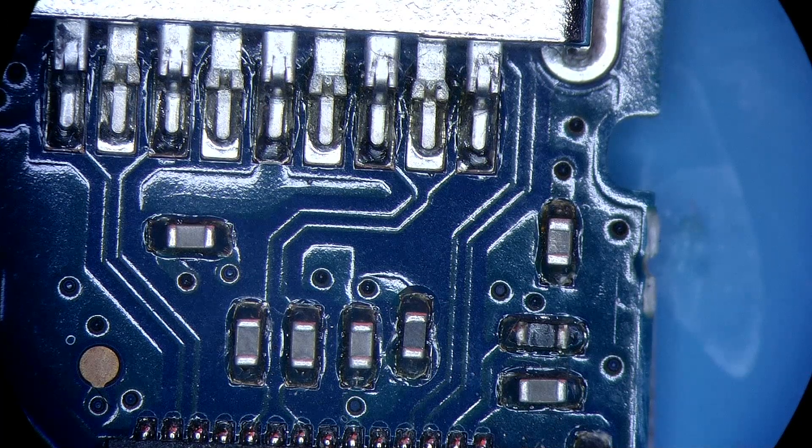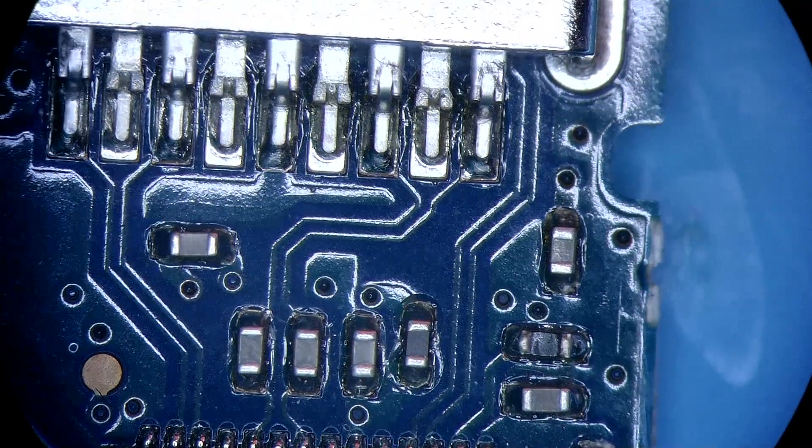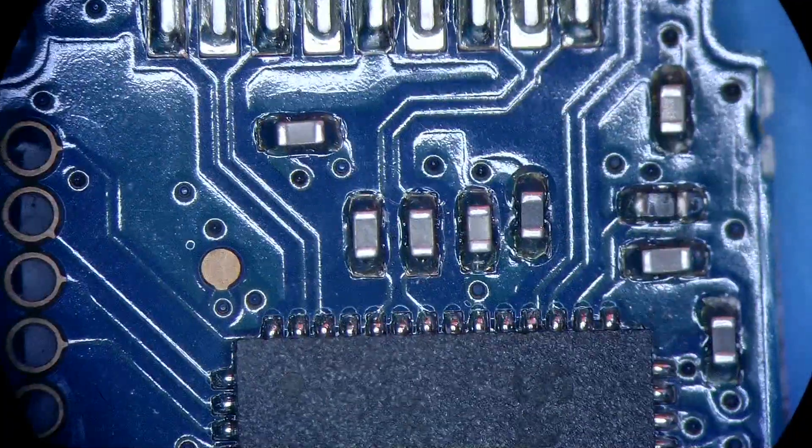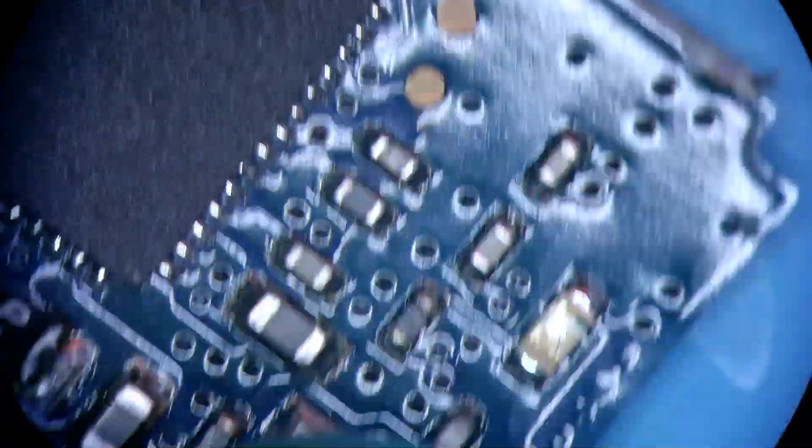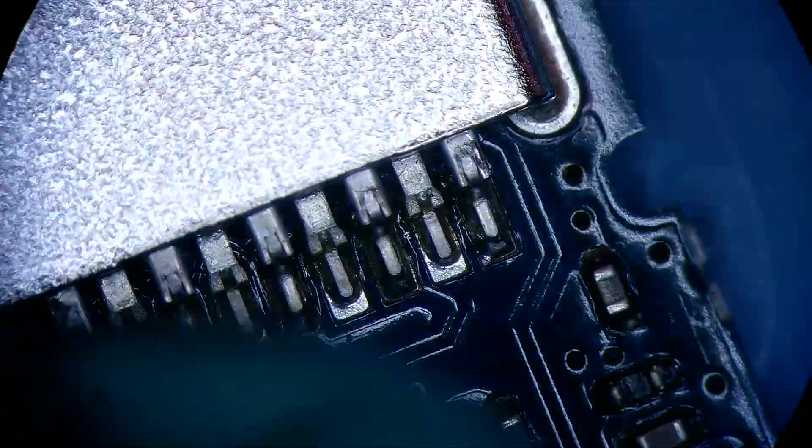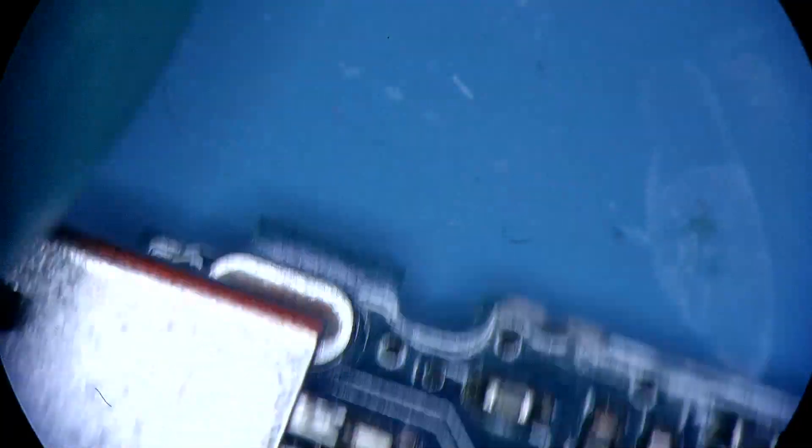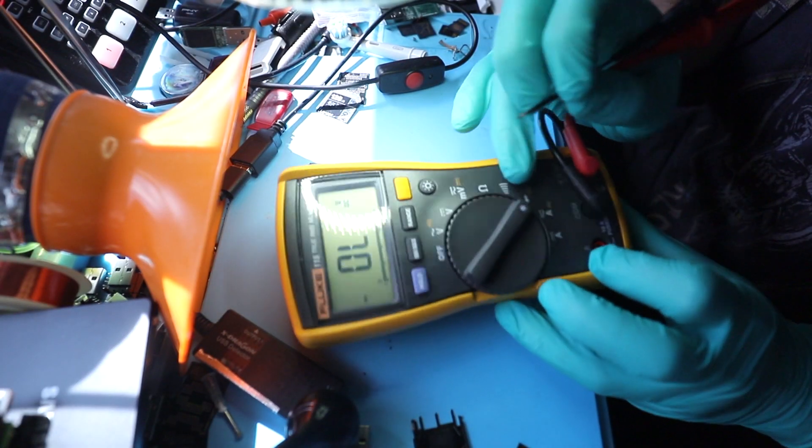We should be looking at anything that looks discolored, anything that looks kind of cooked, but relatively all of these components look fine. Obviously the source of heat is where the problem lays most of the time.